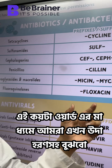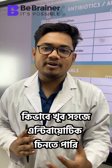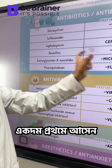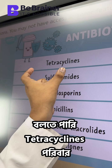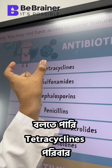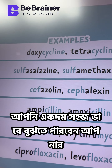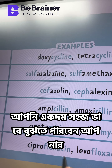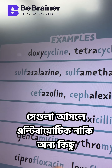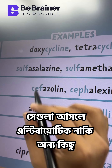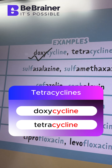We can identify tetracyclines by their names. There are two different types of tetracycline antibiotics: doxycycline and tetracycline.